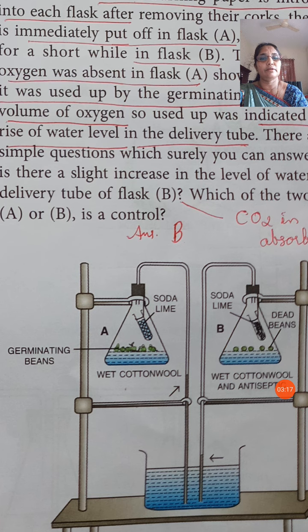Oxygen and carbon dioxide present in the flask are consumed. Oxygen is consumed by the germinating seeds and the carbon dioxide is absorbed by the soda lime. So, a vacuum is created in flask A. A considerable rise in the water level of the delivery tube can be seen.